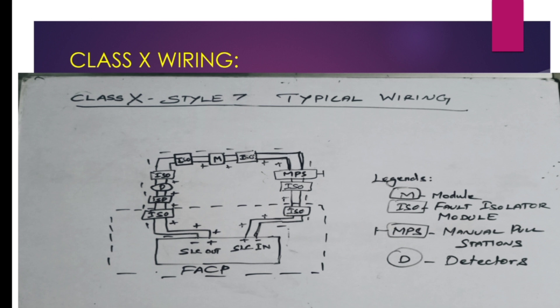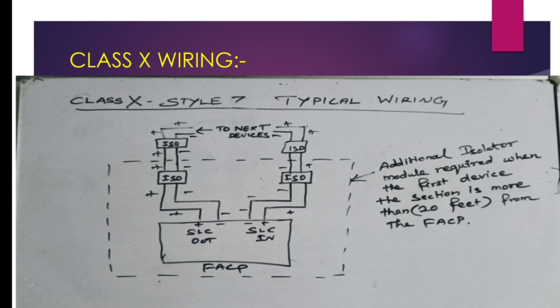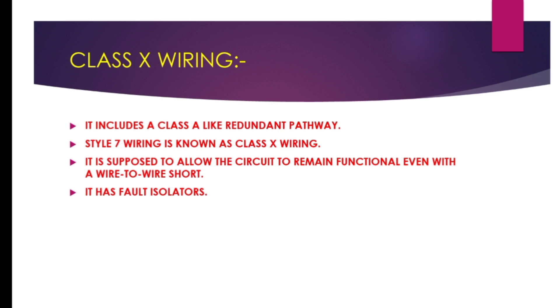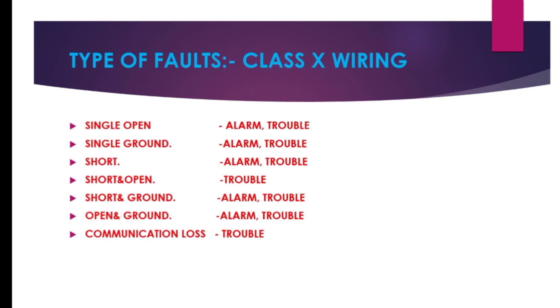Class X wiring has a redundant pathway. Style 7 is known as Class X wiring. It has fault isolators and is designed to allow the circuit to remain functional even with a wire-to-wire short. The following conditions are enunciated as given in the figure.